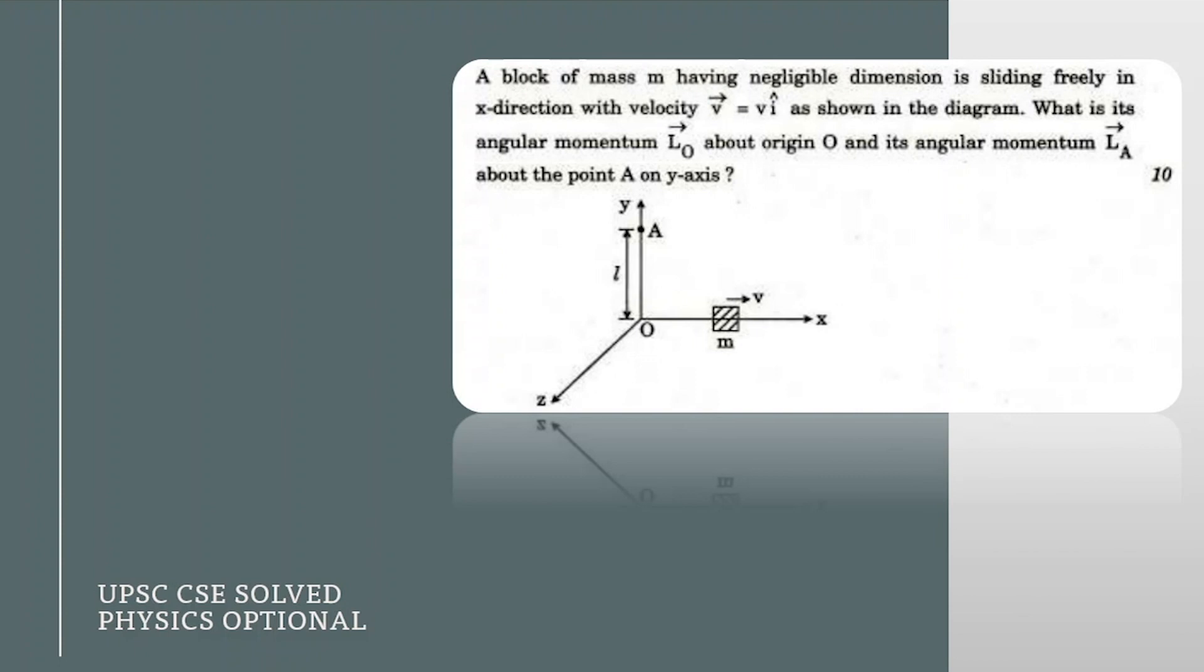Everyone, in today's video we will be solving one of the previous year questions of UPSC CSE physics optional exam. Here's the question: we are given a block of mass m having negligible dimension, so it's like a point mass. This is freely sliding in the x-direction with constant velocity v i cap.